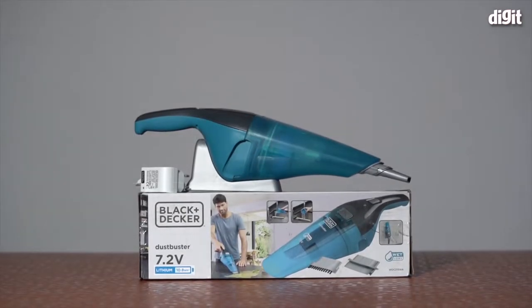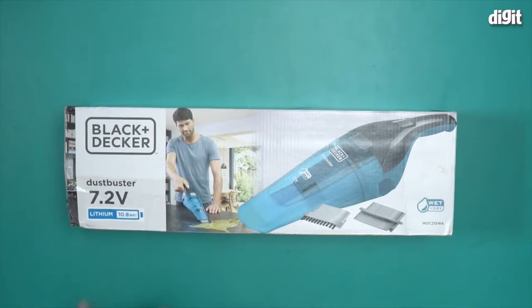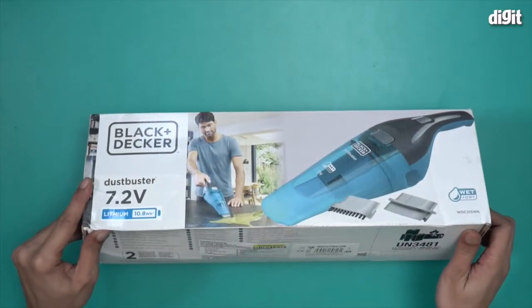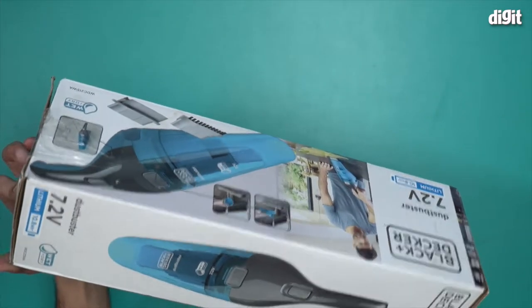Hello and welcome to the unboxing of the Black+Decker Dust Buster 7.2-volt vacuum cleaner. This is a handheld portable vacuum cleaner good for wet and dry vacuum cleaning. It also comes with a 10.8 watt-hour lithium battery. I will take a look at what information we can gather from the box.